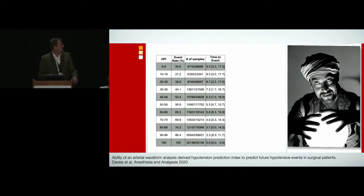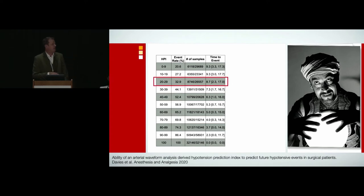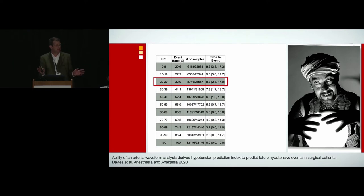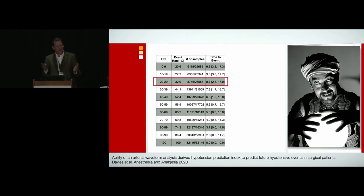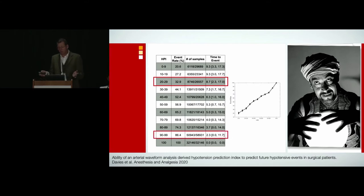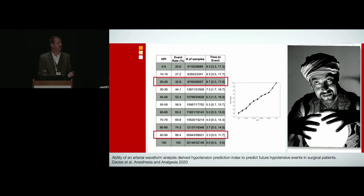This data comes from one of our validation studies. Take an HPI output of around about 20 — about a third of patients at some point will be hypotensive, and the average time to hypotension is around about 8 or 9 minutes. With HPI in the 90 to 99 range, almost all patients will be hypotensive moving forward, and the time to hypotension is shortened to around about 2 minutes.